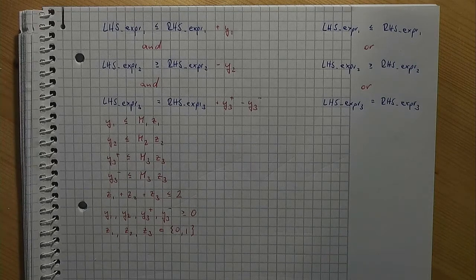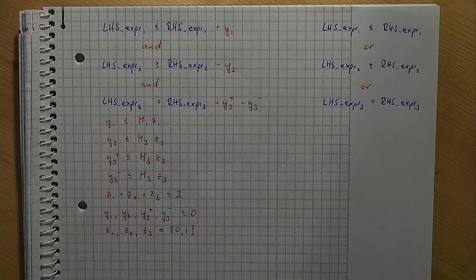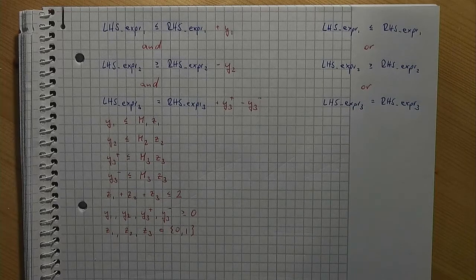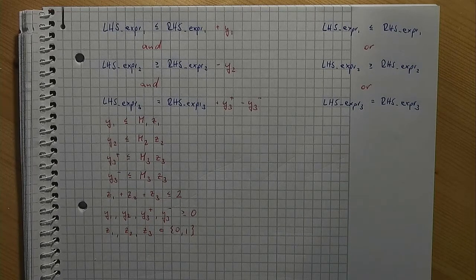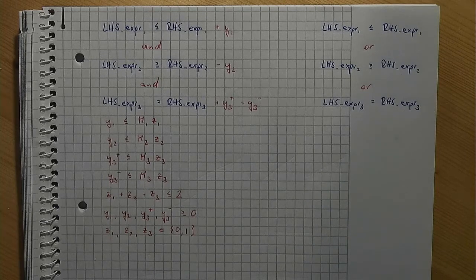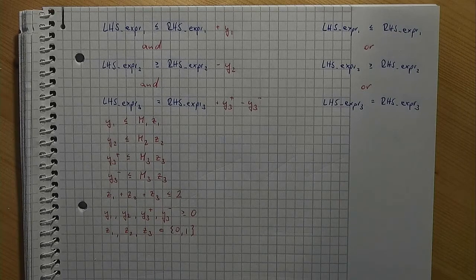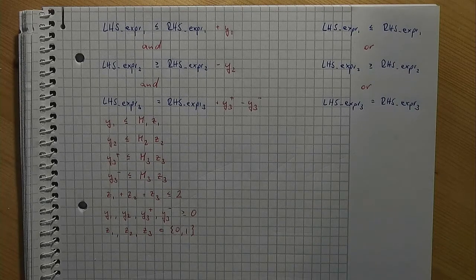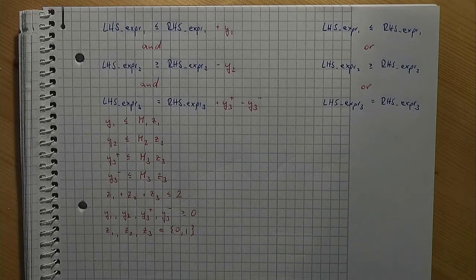You may find it counterintuitive that z equal to 1 indicates that a particular constraint must not hold. You may prefer to define binary variables, let's call them z' such that z' equal to 1 indicates that a particular constraint must hold. In that case, your model formulation would look slightly different.